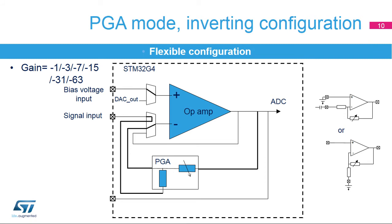The STM32G4's op-amps support inverting amplifier mode with 6 fixed gains available. The feedback resistors can be selected to have a gain of minus 1, minus 3, minus 7, minus 15, minus 31, or minus 63 to support the programmable gain amplifier function.